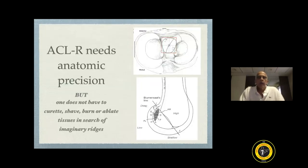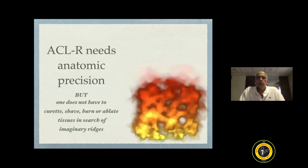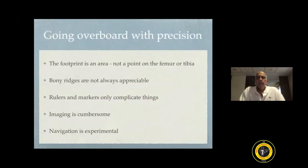Although ACL reconstruction needs anatomic precision, it does not mean you have to go overboard looking at anatomical footprints. One should not shave, curettage, burn, or ablate tissues in search of some imaginary ridges or trying to be too precise. If you try to go overboard with precision, you will end up damaging biology, which is a critical part of an ACL reconstruction.